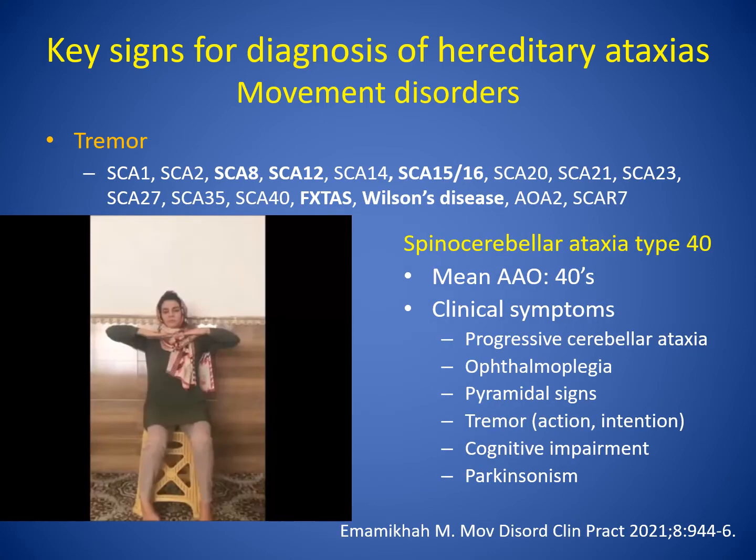Many hereditary ataxia disorders, especially SCA 8, 12, 15, 16, 23, Fragile X-associated tremor ataxia syndrome, and Wilson disease, can present with tremor during the disease course. Among these, I will introduce SCA 40 first.